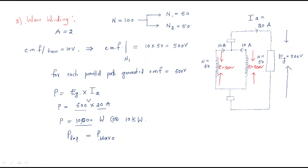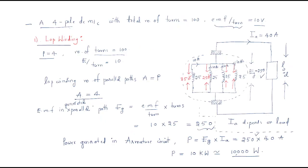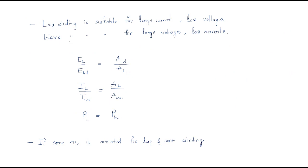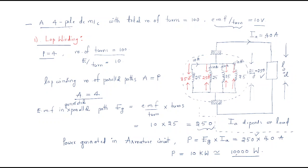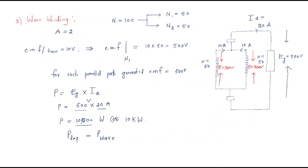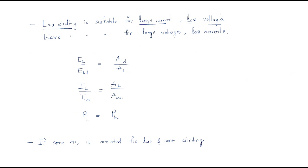The power generated in lap winding equals the power generated in wave winding. An important point: lap winding is suitable for large current and low voltages. In lap winding, the current is 40 amps and the voltage is 250 volts — large current, low voltage — because it has more parallel paths.